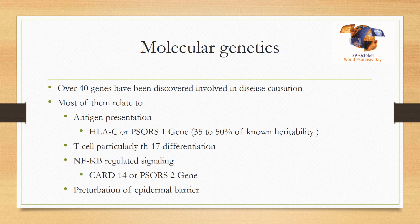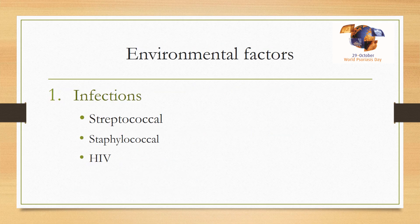Psoriasis represents a spectrum of genetic diseases — at one end, rare families with only a single gene mutation causing psoriasis, and at the other end, more commonly, changes in multiple genes interacting with environment. Over 40 genes have been discovered involved in disease causation, most relating to antigen presentation. The most common is HLAC or PSORS1, responsible for 50% of known heritability. Other pathways include T-cell differentiation particularly TH17, NF-κB-regulated signaling involving the PSORS2 or CCAR1 gene, and perturbation of the epidermal barrier.